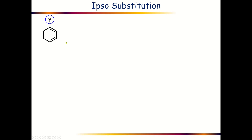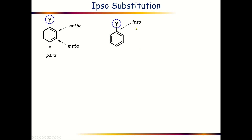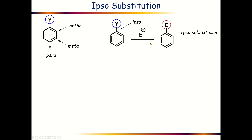As we all know, these three positions are known as ortho, meta and para positions. But what about this position? This position is actually known as the ipso position. So when a substitution reaction takes place in this particular ipso position, that substitution reaction is known as the ipso substitution reaction.